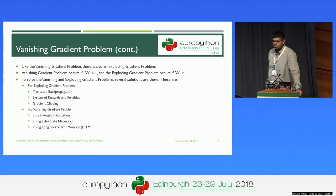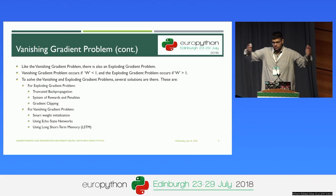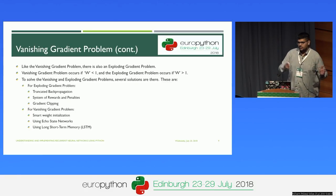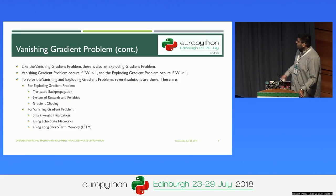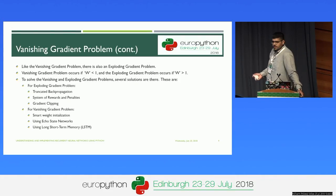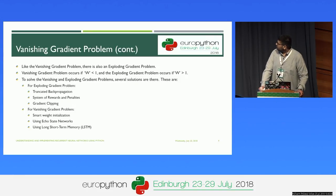To solve these vanishing and exploding gradient problems, we use certain techniques. For the exploding gradient problem, we have truncated back-propagation, where we divide the dataset into certain batches and back-propagate only within those batches sequentially. We also have a system of rewards and penalties similar to reinforcement learning, and gradient clipping — if the gradient goes beyond some range, we clip it and don't propagate it. For the vanishing gradient problem, we have smart weight initialization, echo state networks, and LSTM.